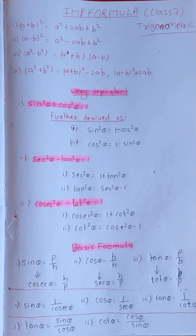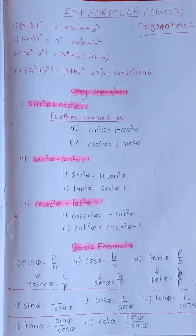I am going to cover Optional Maths for class 7. Trigonometry is one chapter in this course. In these chapters, I am going to do all the exercises. If you want to comment on this chapter, please comment. So, let's start.